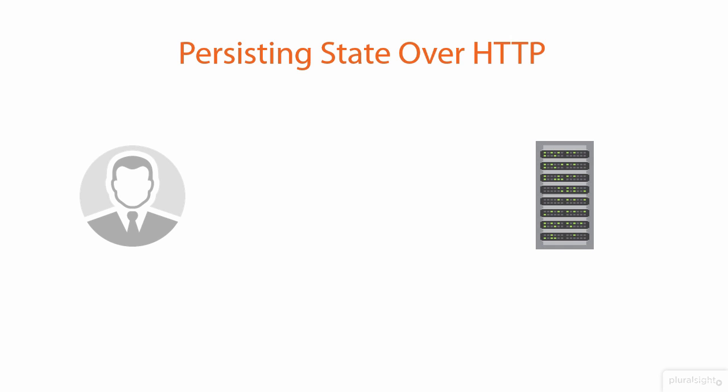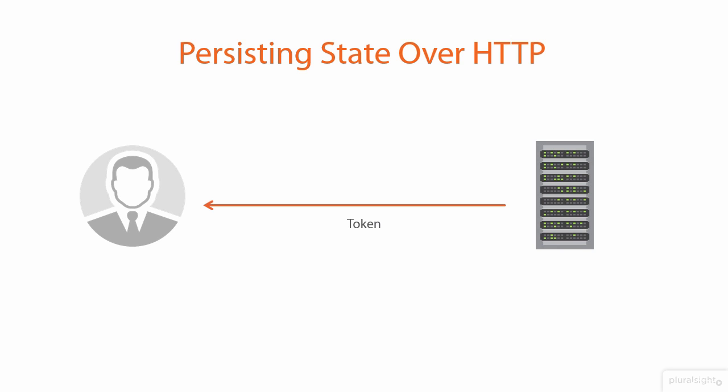We're talking about persisting state over a stateless protocol - that is obviously HTTP. Let's have a look at how the process of state persistence works. A user logs in to the application, that request gets sent, and the application returns a token. This token is unique to the user - their very own one, nobody else has the same token.